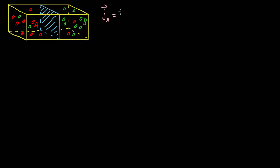Given a box containing atom species A and B, we can calculate the flux of species A through this imaginary surface area here. We denote this J. And this flux by Fick's law is given by negative the diffusion coefficient of A in the mixture AB, multiplied by the density of the system, and then multiplied by the mass fraction gradient of species A.